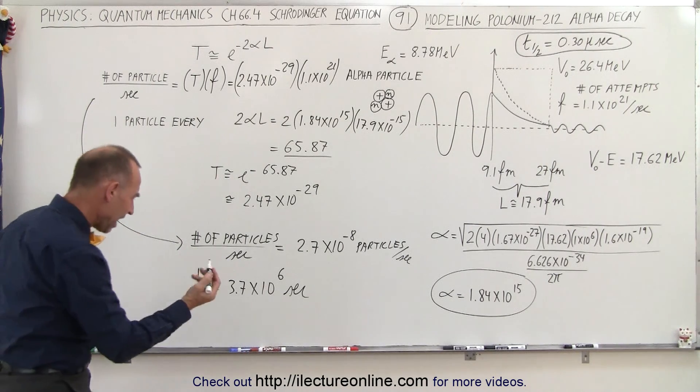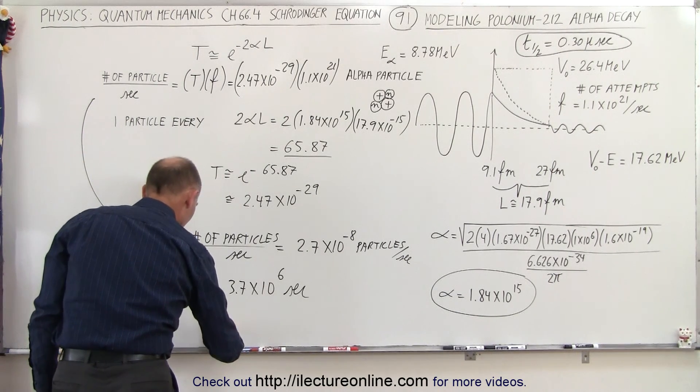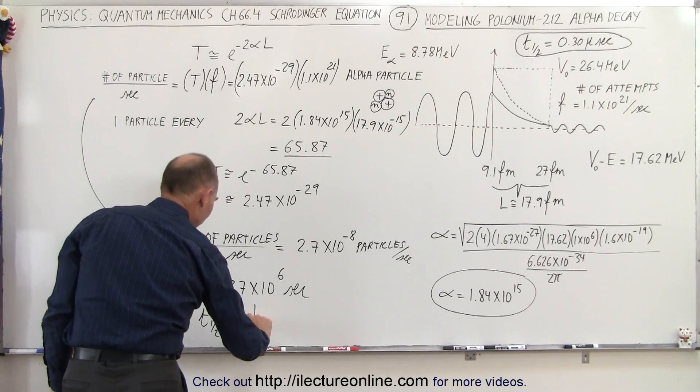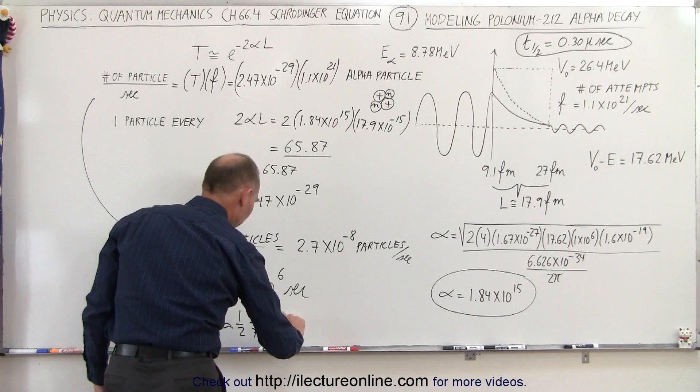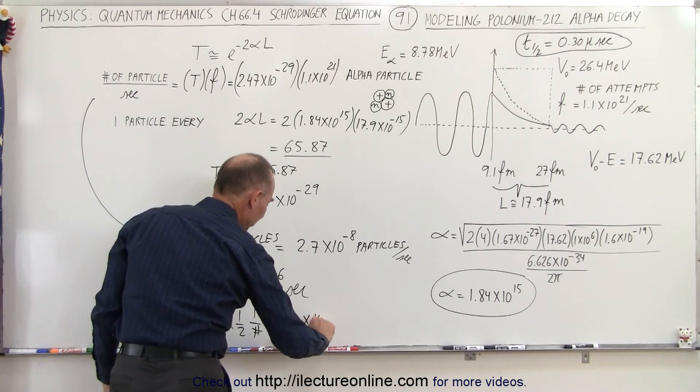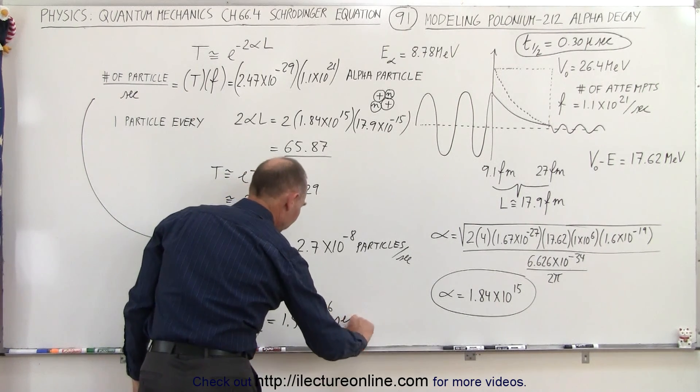That means the half-life is about half of that, so the half-life is approximately one-half of 1 over that number. So we take about half of that, which gives us about 1.5 × 10^6 seconds for the half-life of polonium-212.